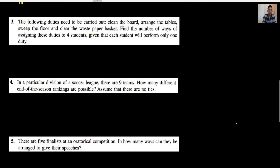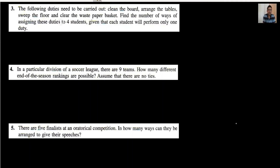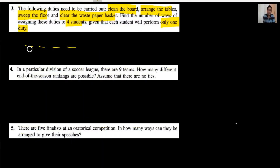Question number 3: the following duties need to be carried out — clean the board, arrange the tables, sweep the floor, and clear all the waste baskets. Find the number of ways of assigning these 4 duties to 4 students, where each student performs only one duty. This is the same concept: 4 × 3 × 2 × 1, or 4 factorial, equals 24.